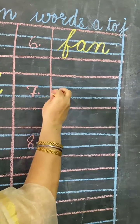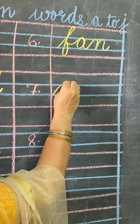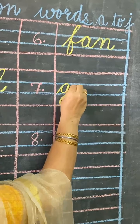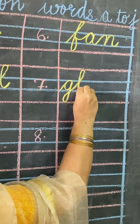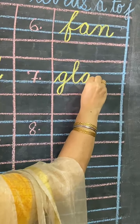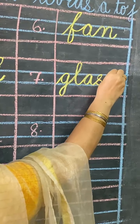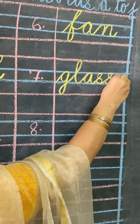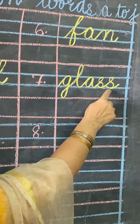Number 7, dictation word is G for Glass. G will come in lower three lines. Then L — L will come in upper three lines. A will come in two middle lines. S will come in two middle lines. Once again S, it will come in two middle lines. G, L, A, S, S — glass.